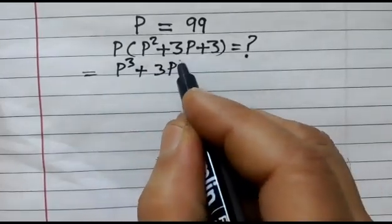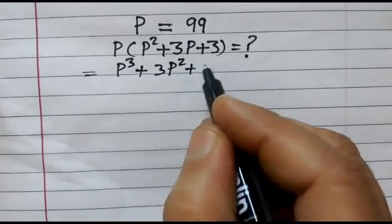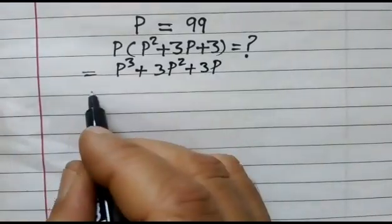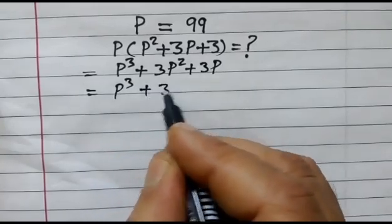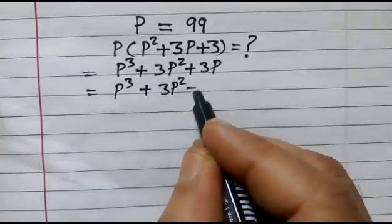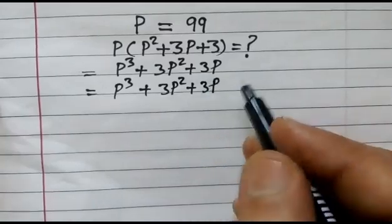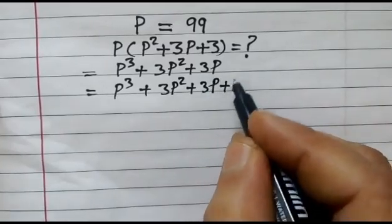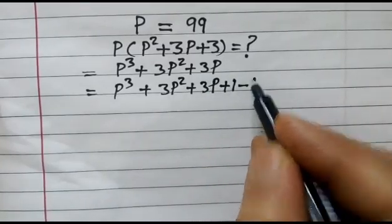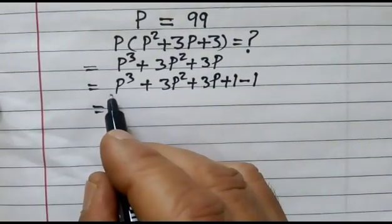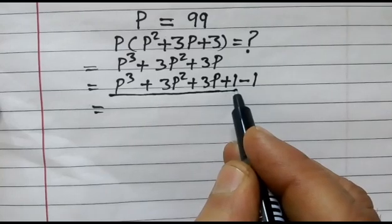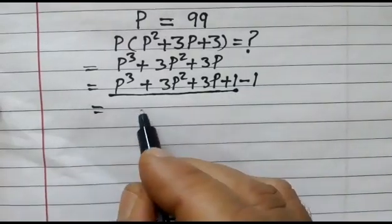In the next step, P³ + 3P² + 3P, we add 1 and subtract 1. Now P³ + 3P² + 3P + 1 is equal to...